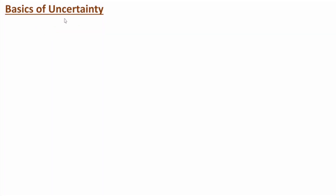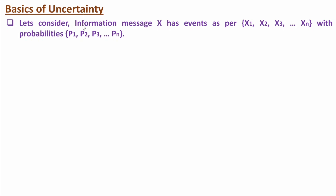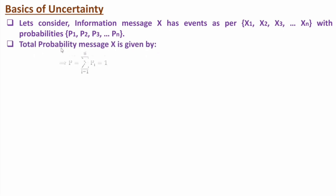Now let me discuss about basics of uncertainty. Let us consider one message signal. Information is a message, so let us say one message X is having multiple events: X1, X2, X3 up to Xn. These events have probabilities P1, P2, P3 up to Pn. The total probability of message X is the algebraic sum of probabilities of different events, and that will be unity.